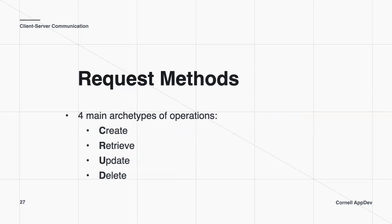There are four main archetypes of operations, and there's an acronym to remember these four: CRUD. It's create, retrieve, update, and delete. Create means you're trying to create something. Retrieve means you're trying to get some information. Update means you're trying to change something that already exists. And delete means you're trying to delete something that already exists.